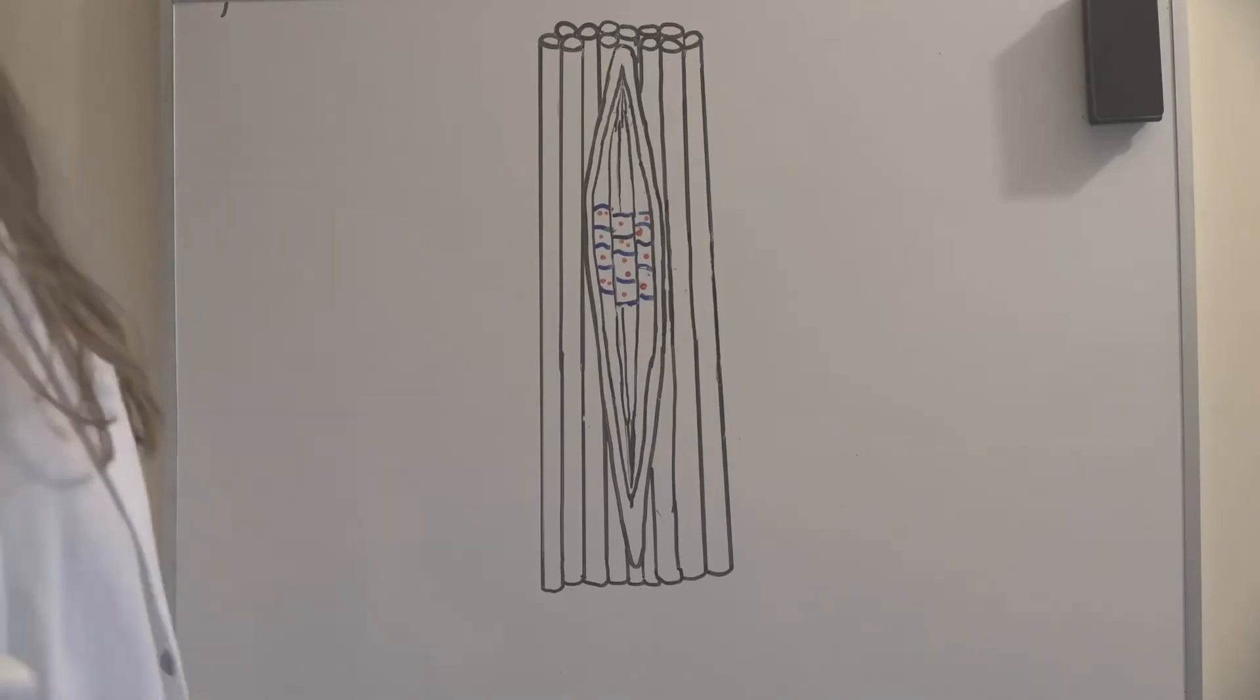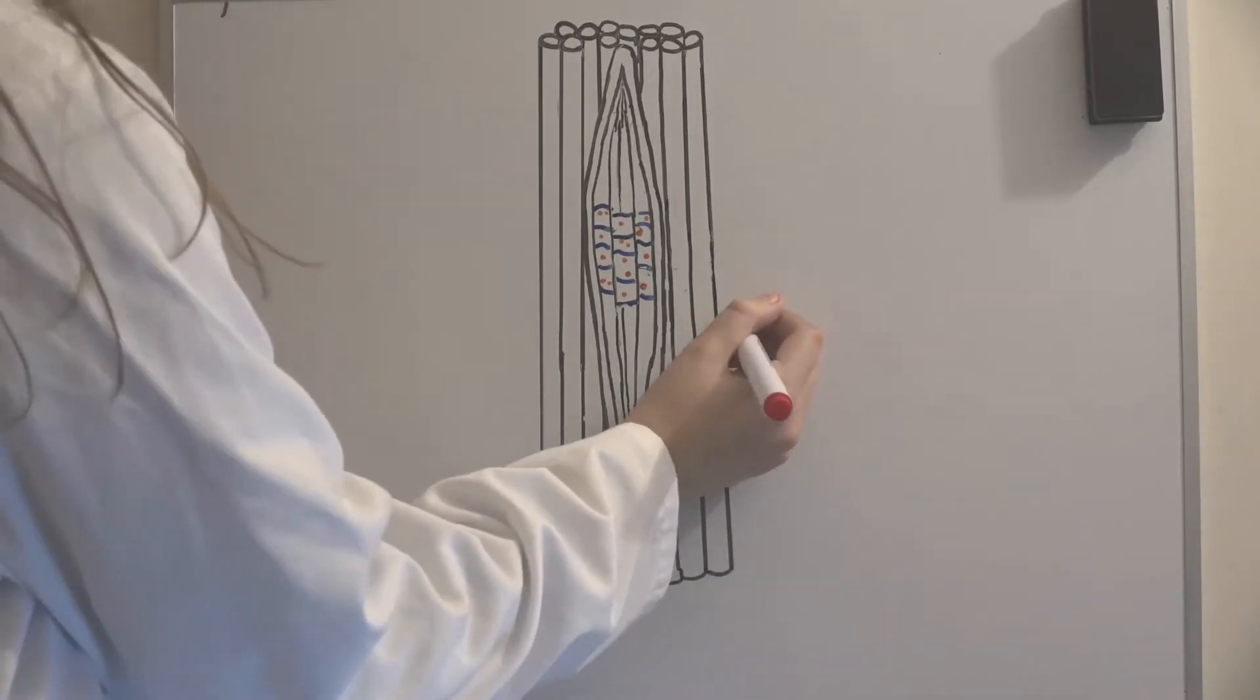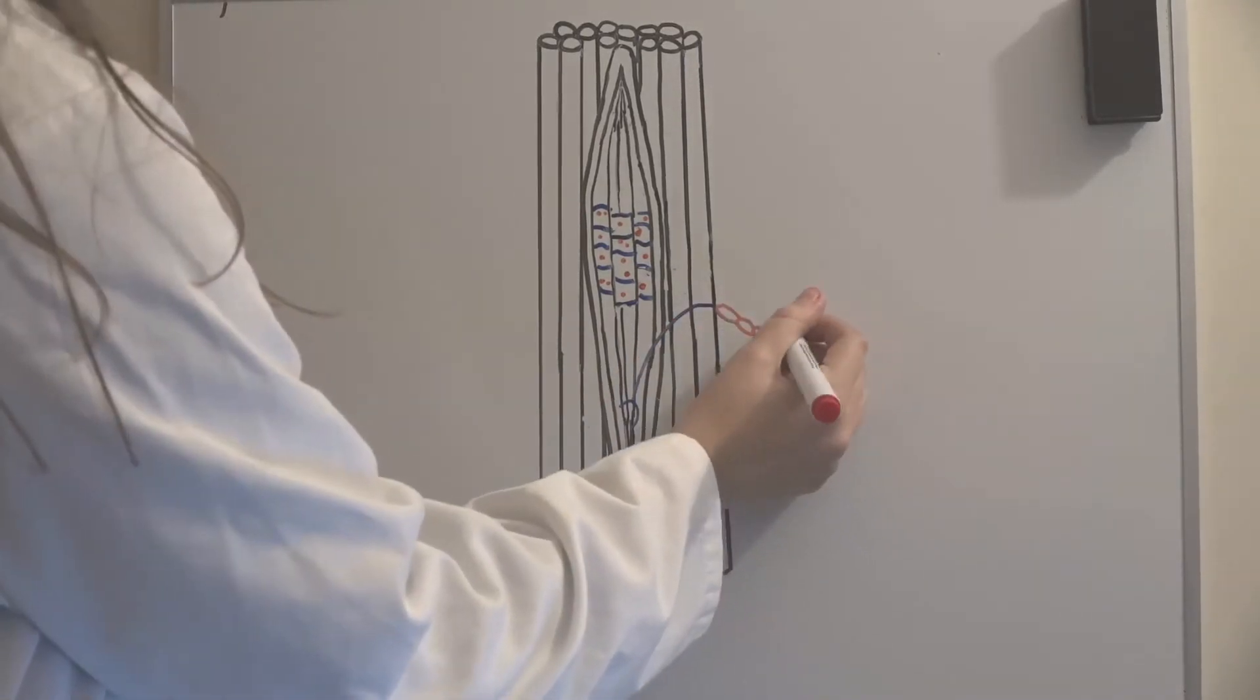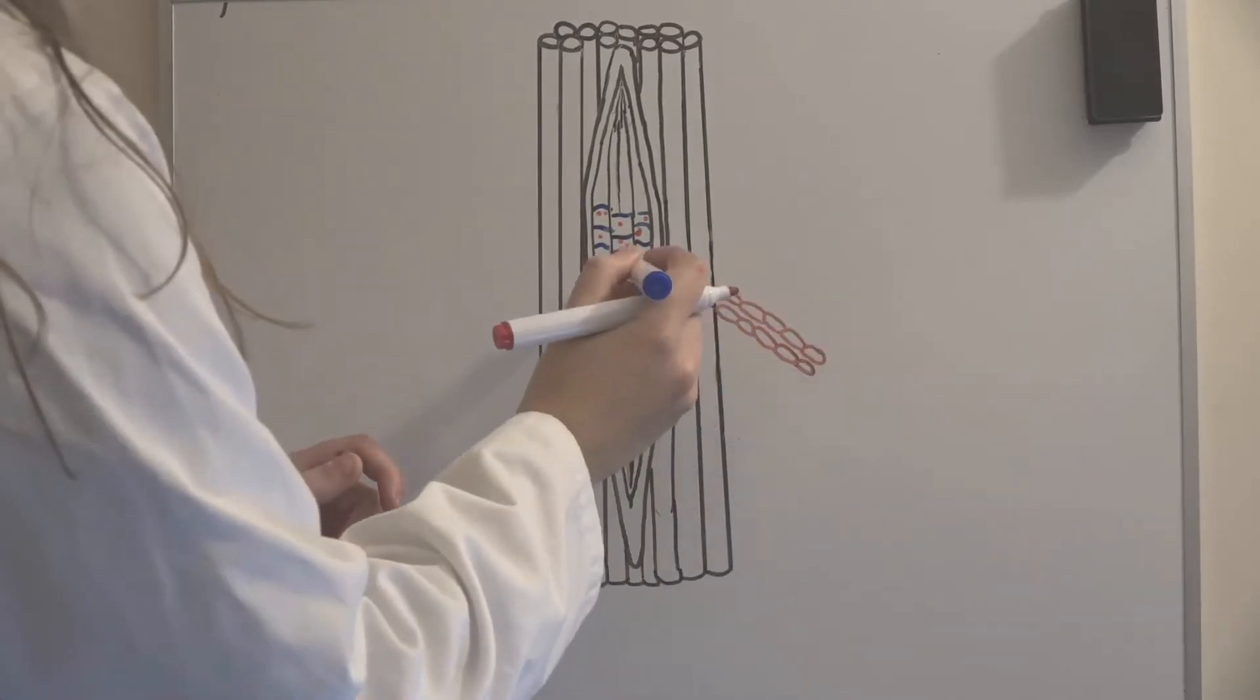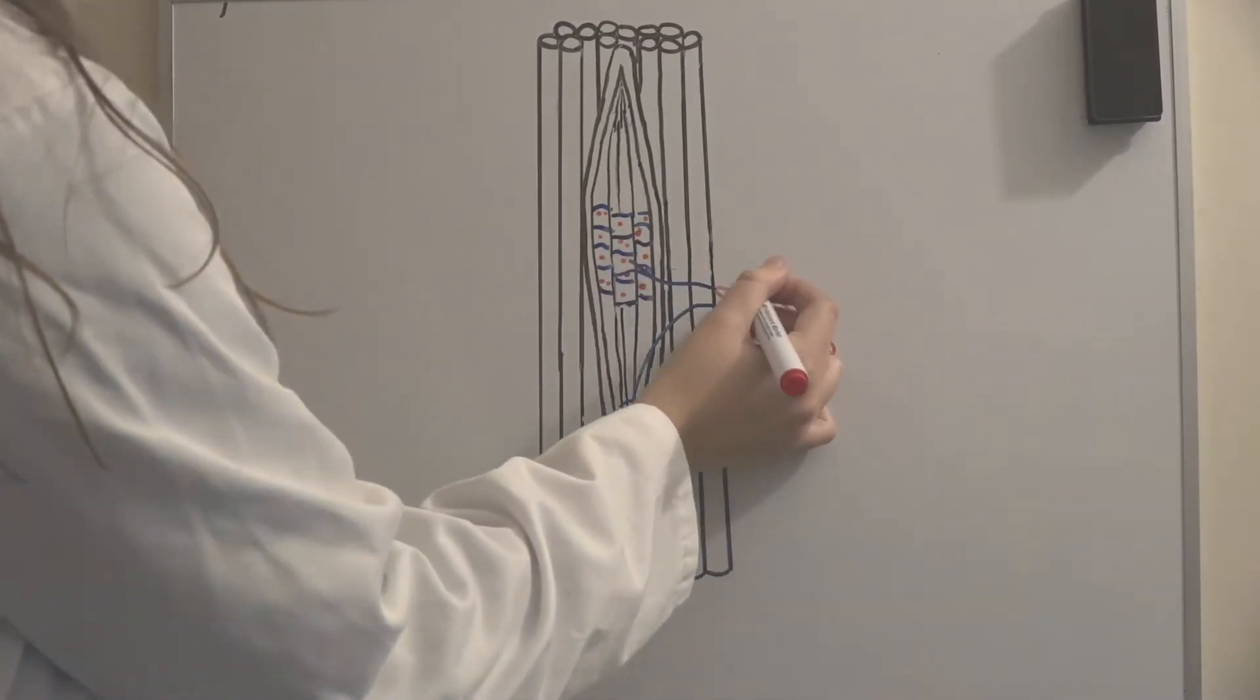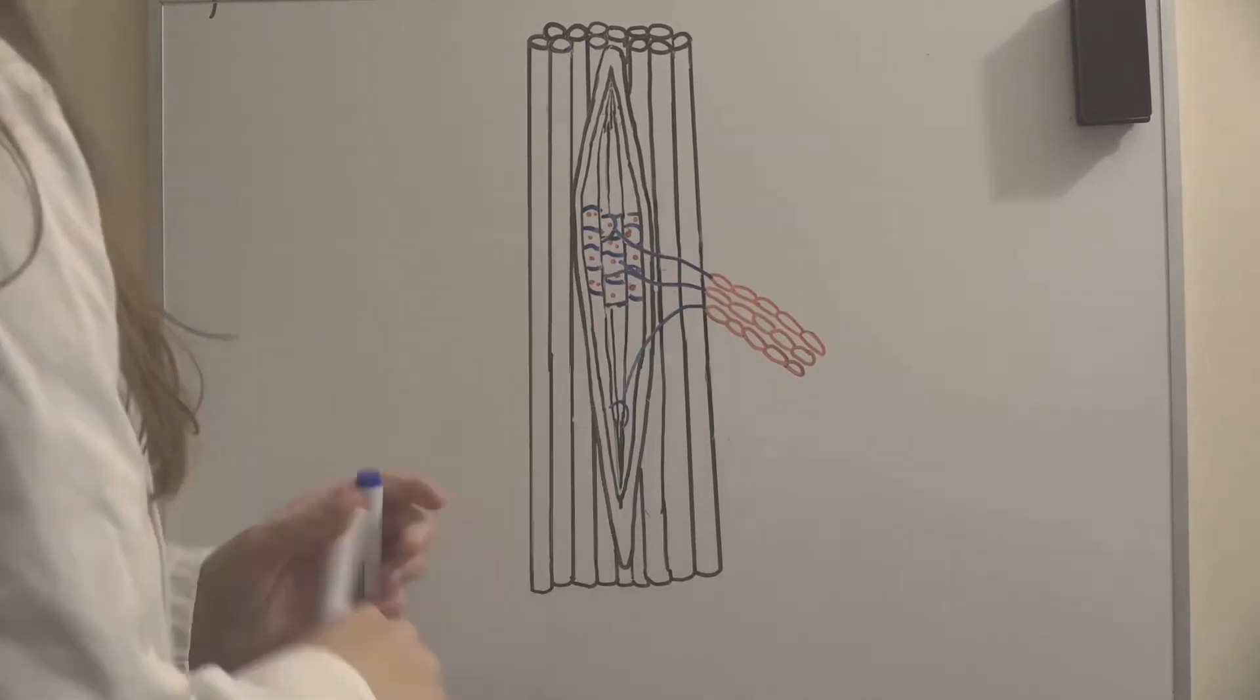We now know an example of a spinal reflex causing movement, but how do proprioceptors monitor the movement of these body parts? Proprioceptors are found in striated muscles and are most abundant in places such as the hand.